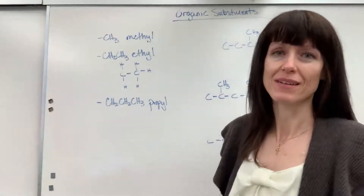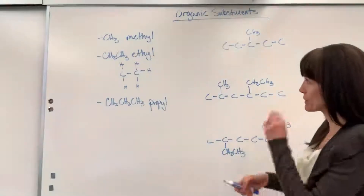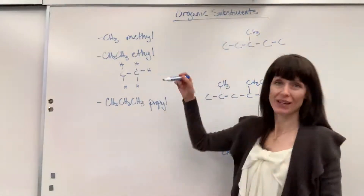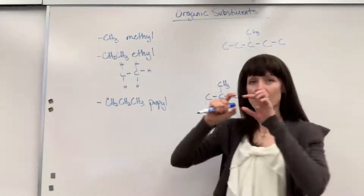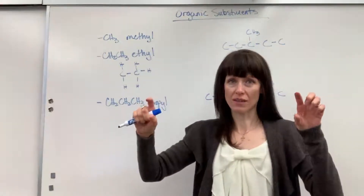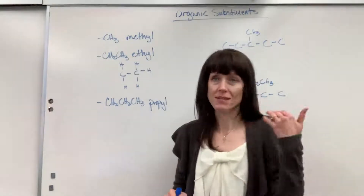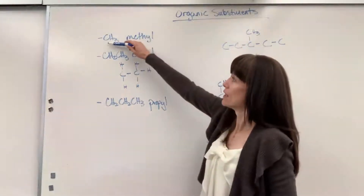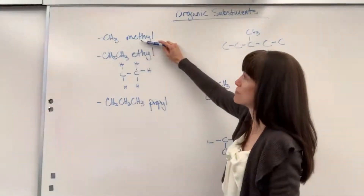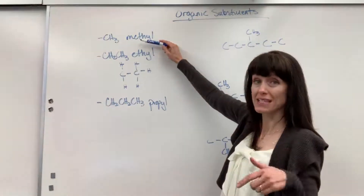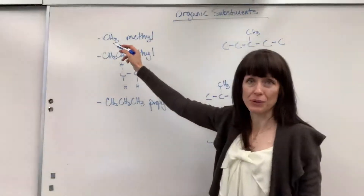We're going to talk about naming substituents on organic chains. If we have on the longest chain — the backbone, the longest chain of carbons — if you have one carbon attached to that longest chain, one carbon is 'meth,' and the ending for a substituent is 'yl.' So this is called a methyl group.